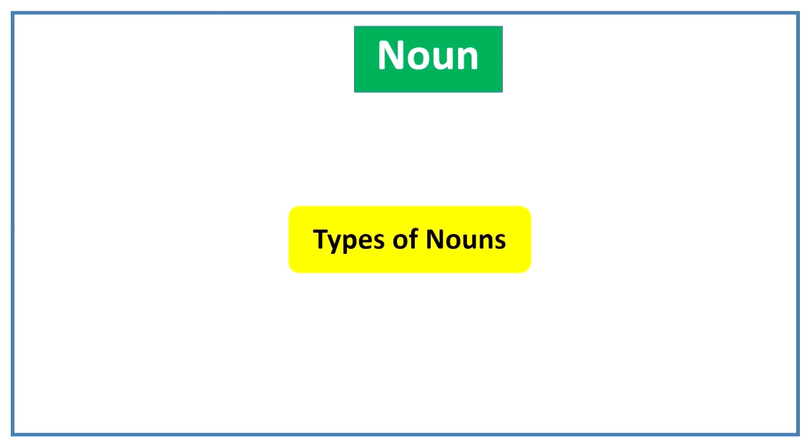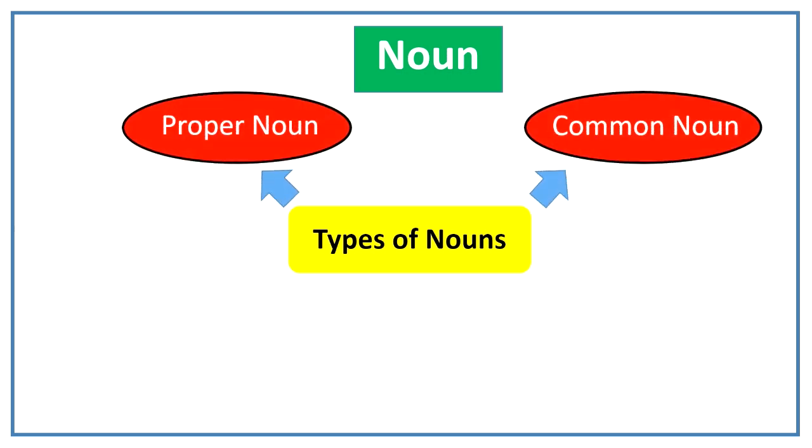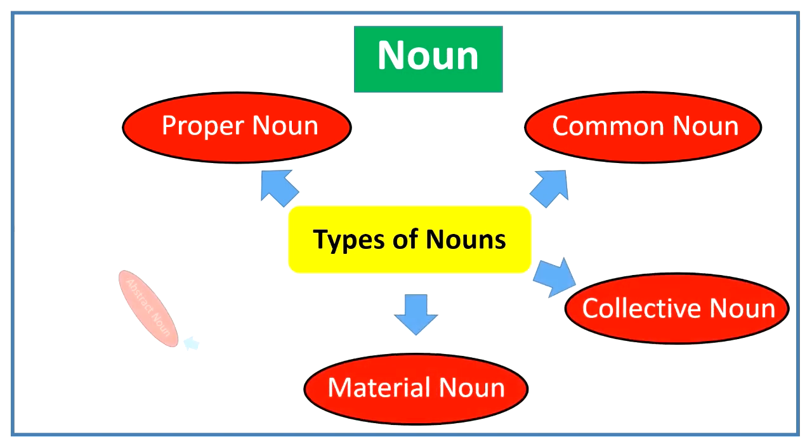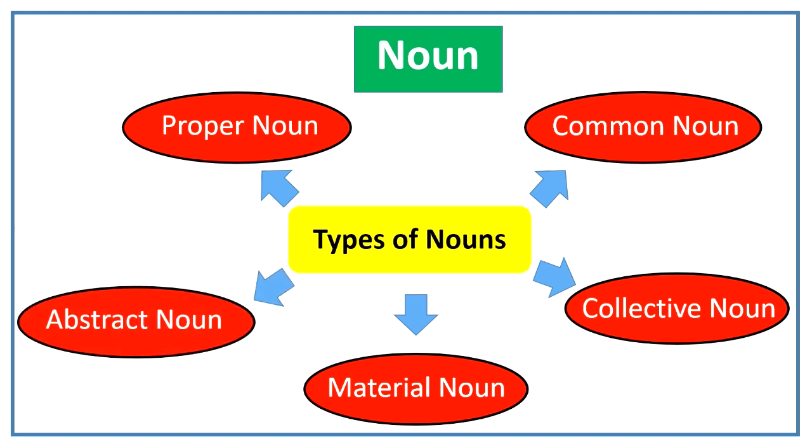Types of nouns. Nouns are generally of five types: proper noun, common noun, collective noun, material noun and abstract noun. In this video we will learn about each one of them.